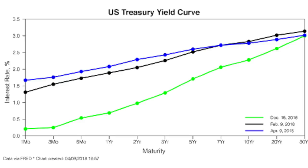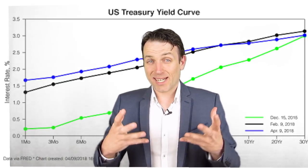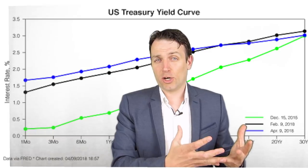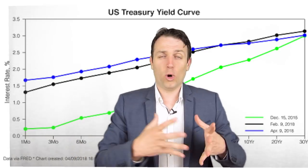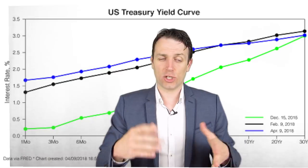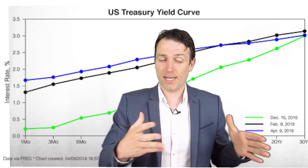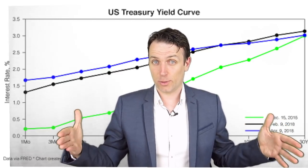The long-term yield on the 20-year and 30-year bonds haven't changed much, which shows that the yield curve is flattening. It was steeper two years ago and now it's becoming flatter and flatter. The black line is from February of this year and the blue line is from April 9, 2018. What the yield curve practically shows is the borrowing cost for the US government, or any other government or company — the cost of borrowing money spread across different maturities.